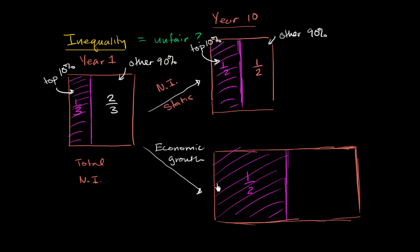This is still a situation where you've had inequality increase. But the half of national income that's going to have to be split between the other 90% has still grown fairly dramatically. This is how much was being split amongst the other 90% in year one. And notice, it's much smaller than how much is being split by the other 90% in year 10.